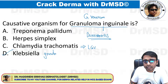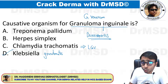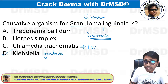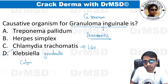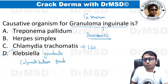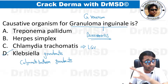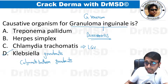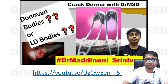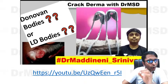Klebsiella granulomatis is the organism responsible for donovanosis. It was previously called Calymmatobacterium granulomatis. The other names of donovanosis are granuloma inguinale and granuloma venereum — very important to remember these alternative names.